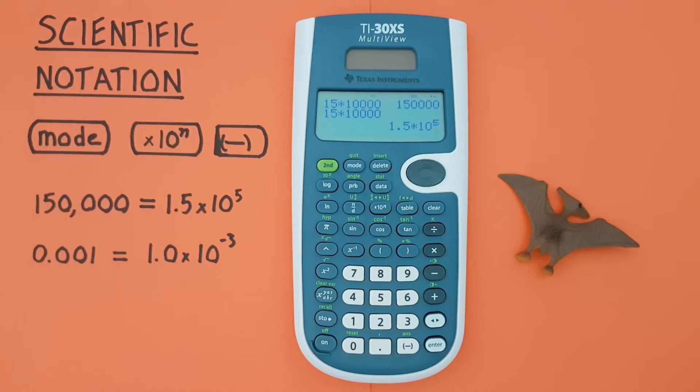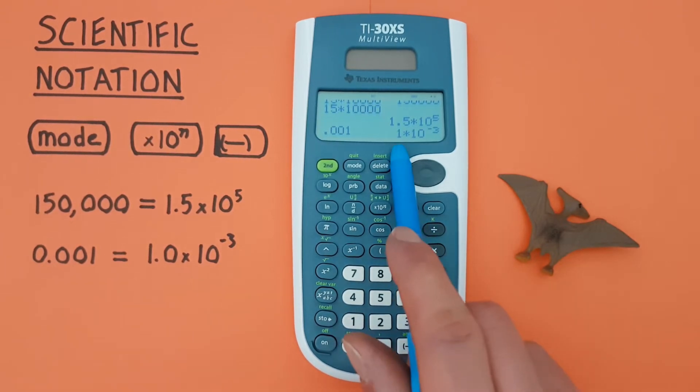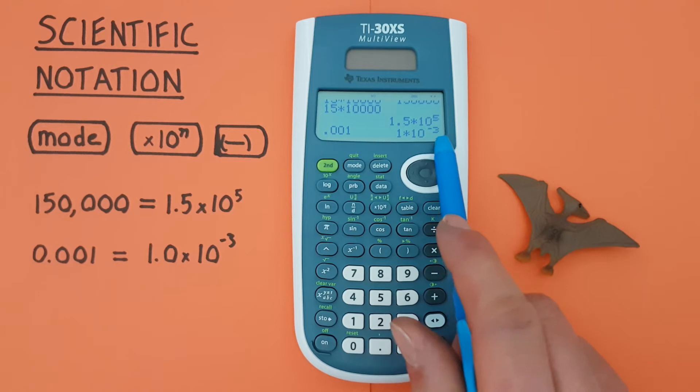This also works for small numbers like 0.001. We can just enter that on our calculator and this mode will convert it to scientific notation. So that gives us 1 times 10 to the power of negative 3.